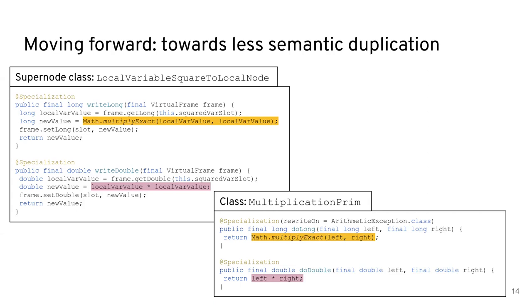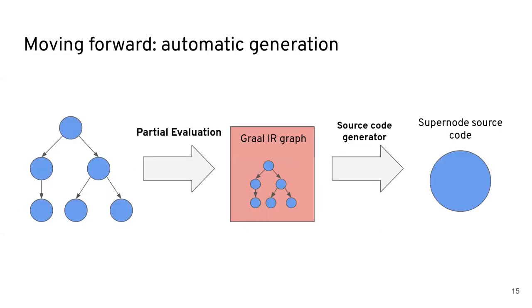And our idea we have for that was to automatically generate all super nodes from the current semantics, instead of just relying on manual implementation as we currently do. So for example, we have three nodes on the left that we want to turn into a super node, and our intuition was that we could use Graal's partial evaluation system, which is used to compile nodes to machine code.